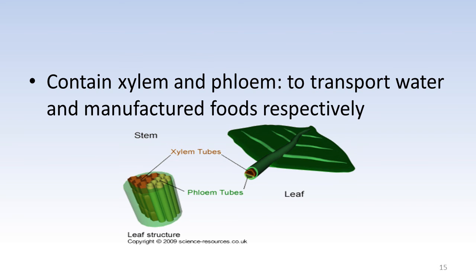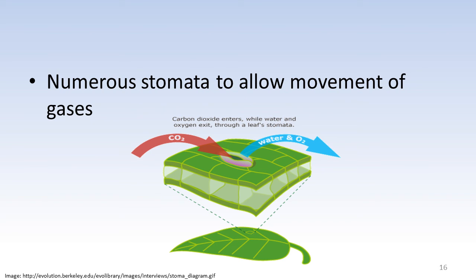The final adaptation that I wish to mention is that leaves normally have numerous stomata at the bottom or at the lower epidermis. This is to allow quick diffusion of gases into and out of the leaves.